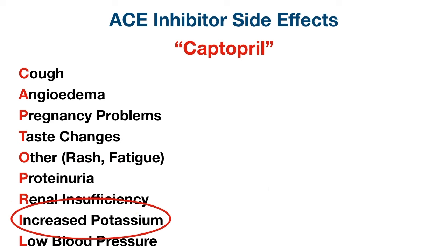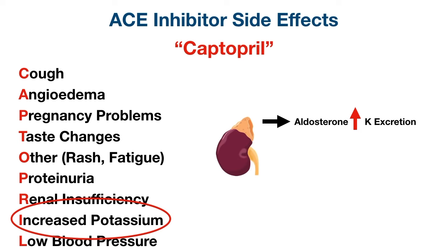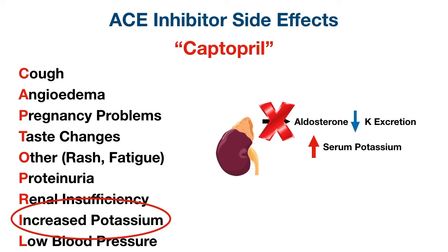The next side effect is increased potassium, known as hyperkalemia. Angiotensin 2 normally stimulates aldosterone release, and aldosterone increases potassium excretion in the urine. With ACE inhibitors blocking aldosterone release, less potassium is excreted in the urine and more remains in the blood, potentially causing hyperkalemia — so it's important to monitor potassium levels. The final side effect is low blood pressure, which makes sense since the goal of ACE inhibitors is to decrease blood pressure, and this is especially relevant if the patient is already taking multiple antihypertensive medications.